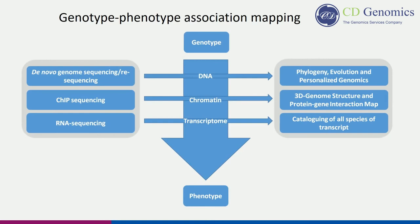NGS platforms can be applied at three levels to explore genotype-phenotype relationships. The first is detection of individual genetic variations, including SNPs, small insertions or deletions, and large-scale structural variations such as copy number variations within a population for which a reference genome is available — i.e., resequencing. The second and third levels are the adoptions of transcriptomics, or the genome-wide analysis of DNA and protein interactions, i.e., ChIP-seq.